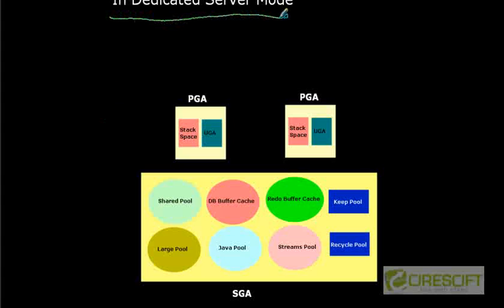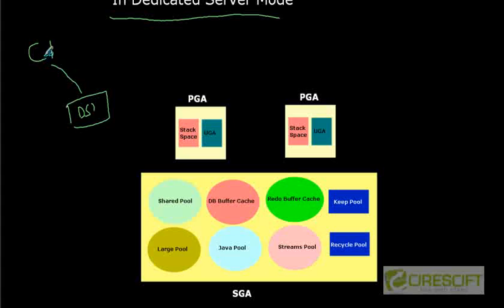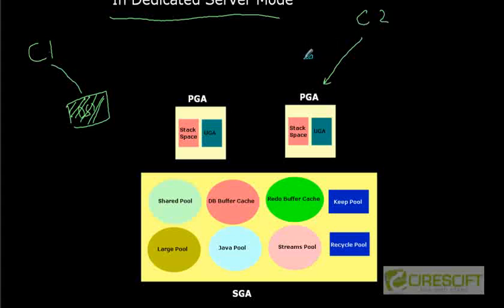In dedicated server mode, the UGA lies inside the PGA. Whenever client C1 comes, we create dedicated server process DS1, which serves only that client. The process stack space taken by DS1 plus the user's requirements — such as ORDER BY sorting — are all part of the PGA. So essentially, UGA is a part of PGA in dedicated server mode. Similarly, client C2 has its own dedicated server DS2 with its own PGA.